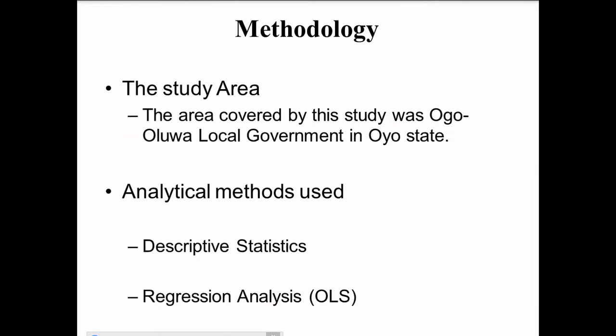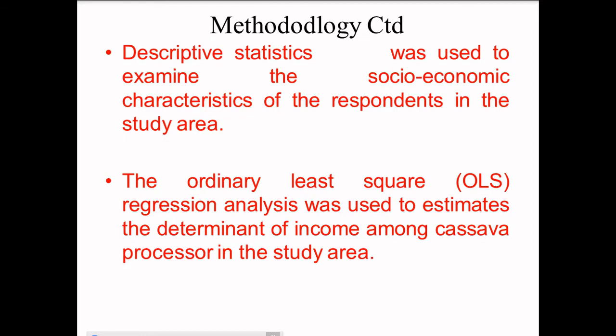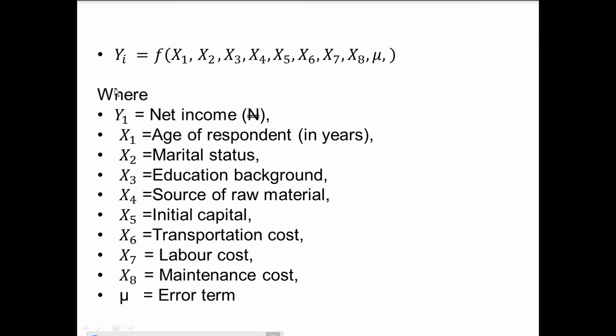The analytical methods used are descriptive statistics and regression analysis. The descriptive statistics was used to examine the socio-economic characteristics of the respondents in the study area. The ordinary least-square regression was used to estimate the determinants of income among cassava processors in the study area. In the model, Y is the dependent variable and X1 to X8 are the independent variables.